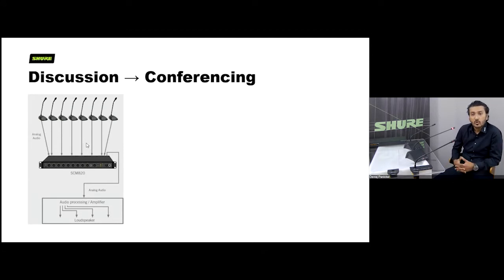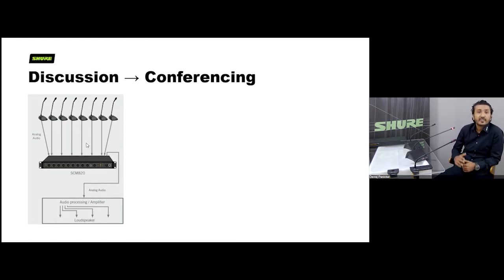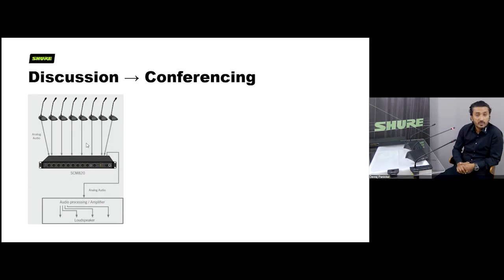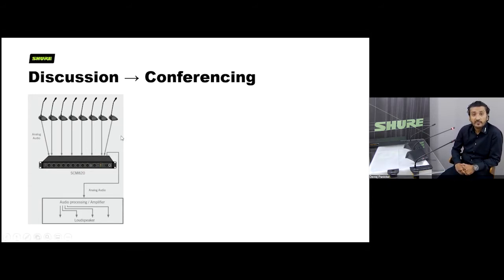A discussion system is basically a PA system which allows multiple people sitting in a meeting room to have a microphone in front of them and have their voice amplified in that room, so a large audience can hear each other clearly. What you're seeing on screen is a very typical traditional approach: a gooseneck microphone on every seat, with a cable going to a mixer, then to a processor or amplifier, and then to the house speakers.